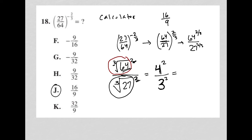So now that we pull those out of the cube roots, we square both, and we get 4 times 4 is 16, and 3 times 3 is 9, and again, that's why 16 ninths is the correct answer.